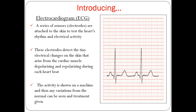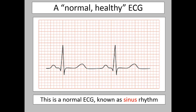The activity is shown on a machine — at Liverpool it was an old computer showing a trace in real time. Any variations from normal can be seen. This is a normal ECG: there's a small peak, then a big peak up and down, a little break, then a slight raise and down again — that is one beat of the heart. This diagram shows two heartbeats. The shape and spacing between peaks is normal, known as sinus rhythm.